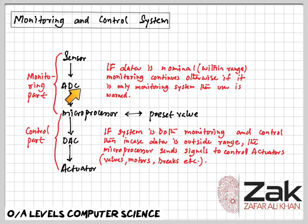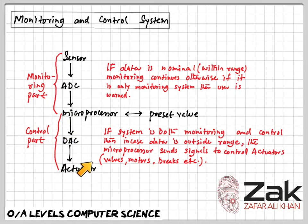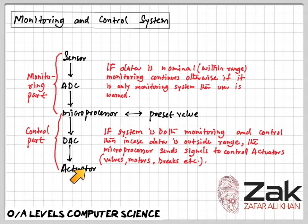For the feedback loop, if the new data is outside the acceptable range, the microprocessor or computer sends a signal to control the valves, motors and so on, if the output from the system affects the next set of inputs from the sensor.